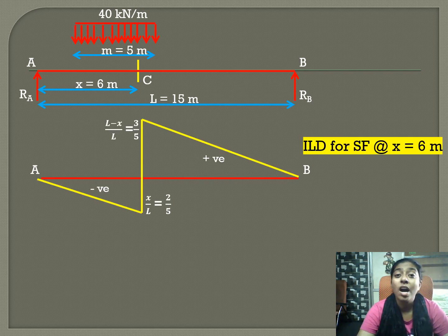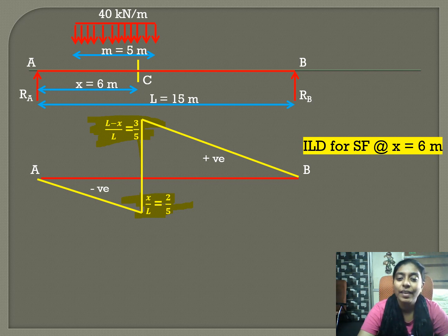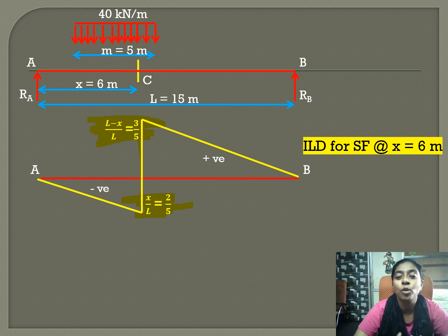For the influence line diagram for shear force: the positive ordinate is (L minus x) / L, which equals 3/5, and the negative ordinate is x/L, which equals 2/5. Once these positive and negative ordinates are obtained, we can find the maximum negative and maximum positive shear force by placing the UDL at the proper location.